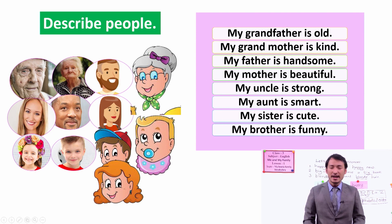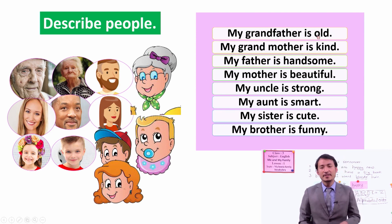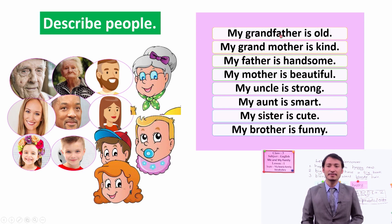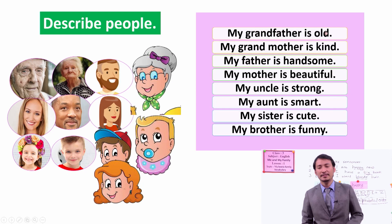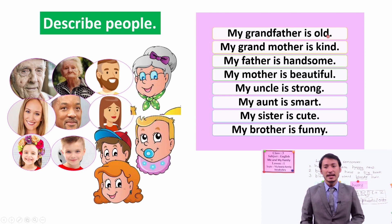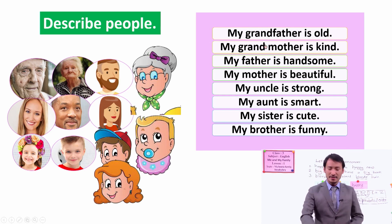You can describe with other describing words as well, by replacing these words. You can say, 'My grandfather is slim,' 'My grandfather is fat,' 'My grandfather is very active.' You can describe like this.